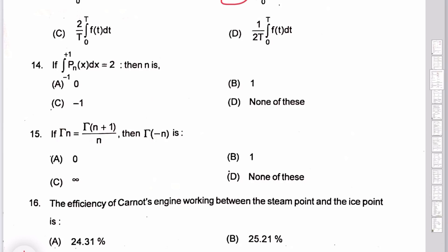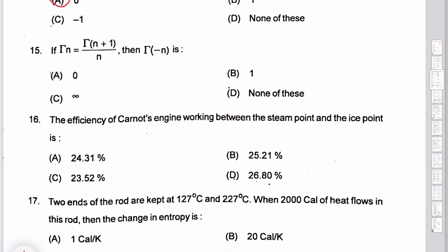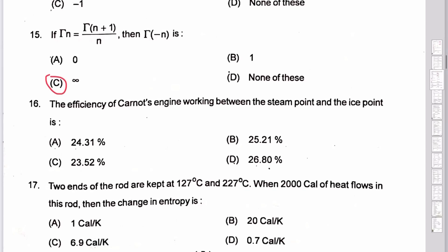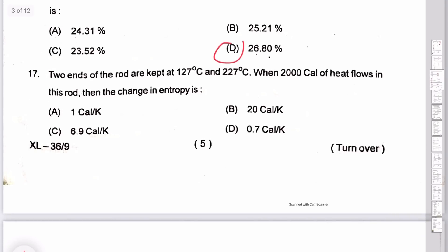The dx integration x from −1 to 2: the entity should be 0. For question 14, option A. Then question 15: Γ(−n)·Γ(1−n) = π/sin(πz). For a Carnot engine, efficiency = (T2 − T1)/T2; option D is the correct answer at 26.80%. Two ends of the rod are kept, so heat flows: 20 calories per kelvin.